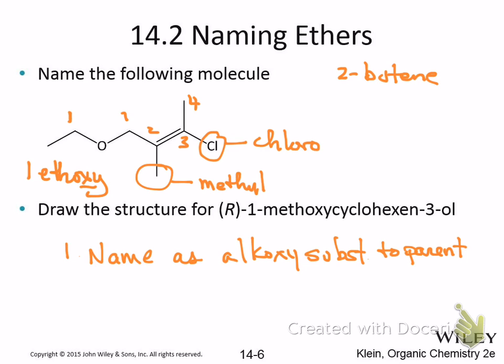So how do you put it together? Alphabetically. So this is going to be chloro before ethyl before methyl. So it's going to be 3-chloro, 1-ethoxy, 2-methyl. And then what's the last thing? The parent chain: 2-butene.